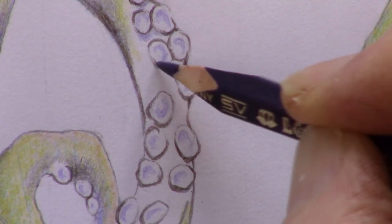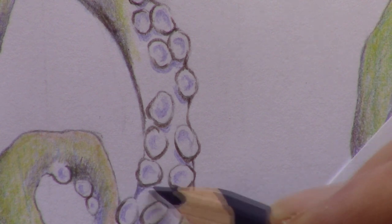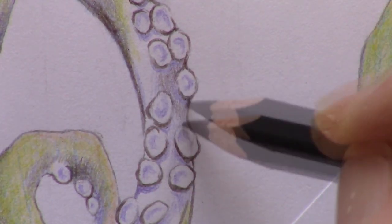The suckers stand out from the tentacle, so I use the same color, purple, to create the shadows around those, which makes them look more three-dimensional.